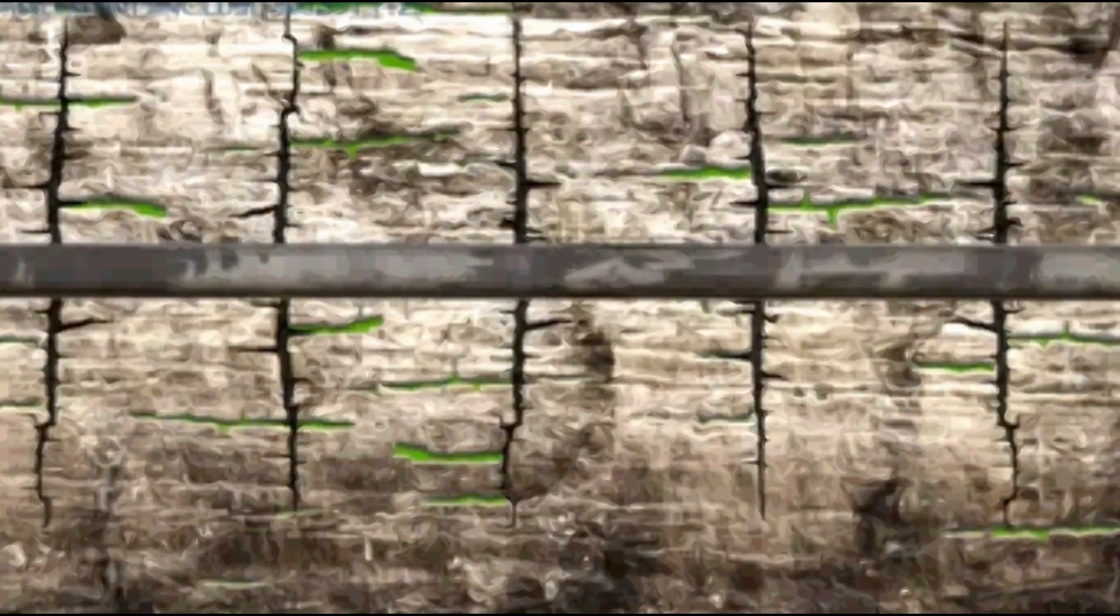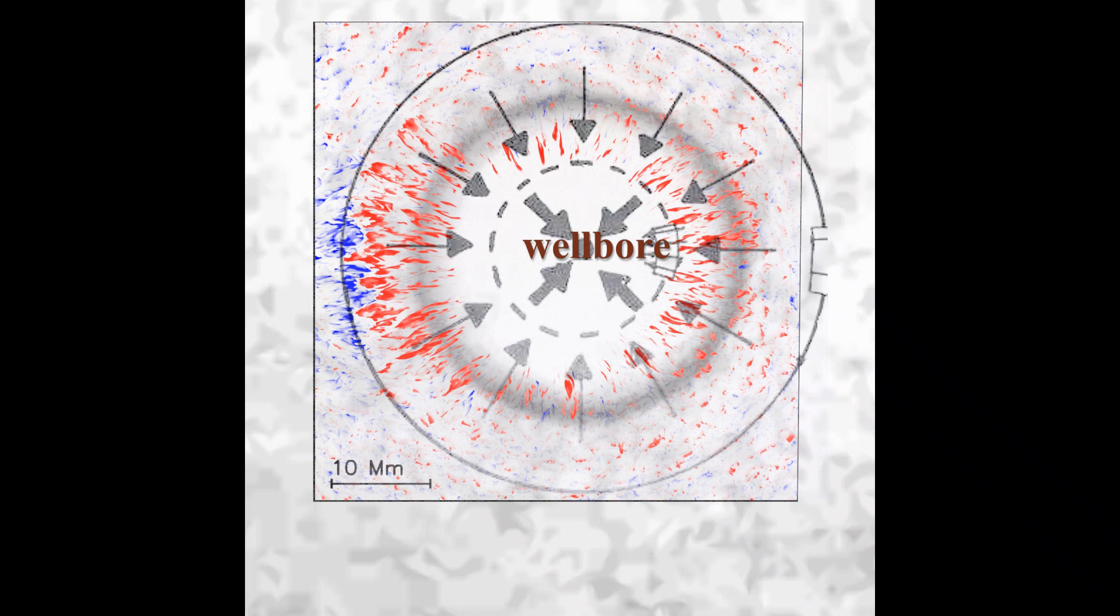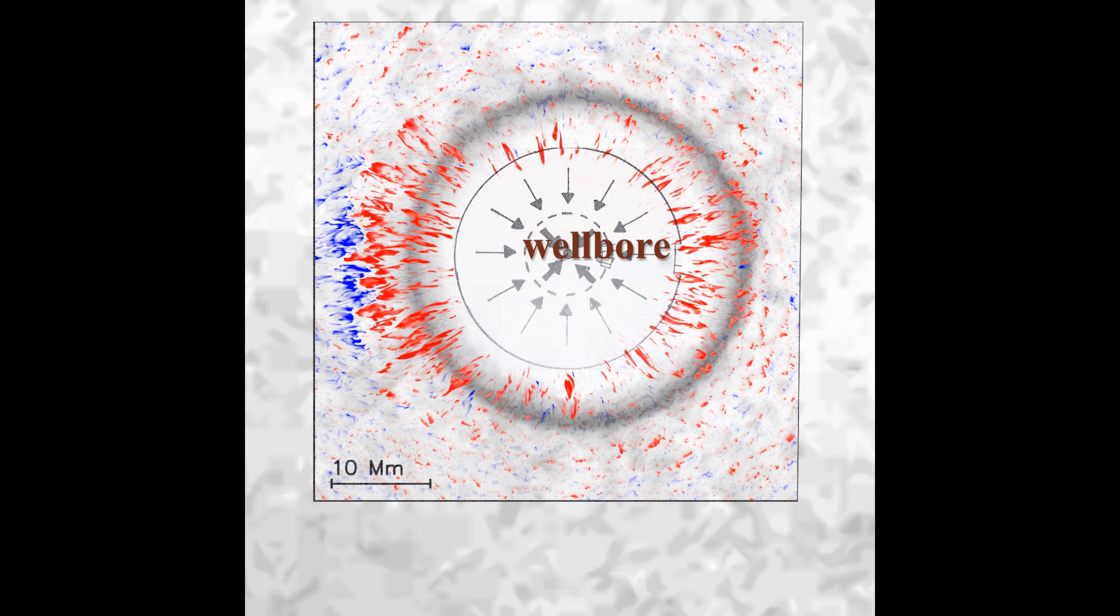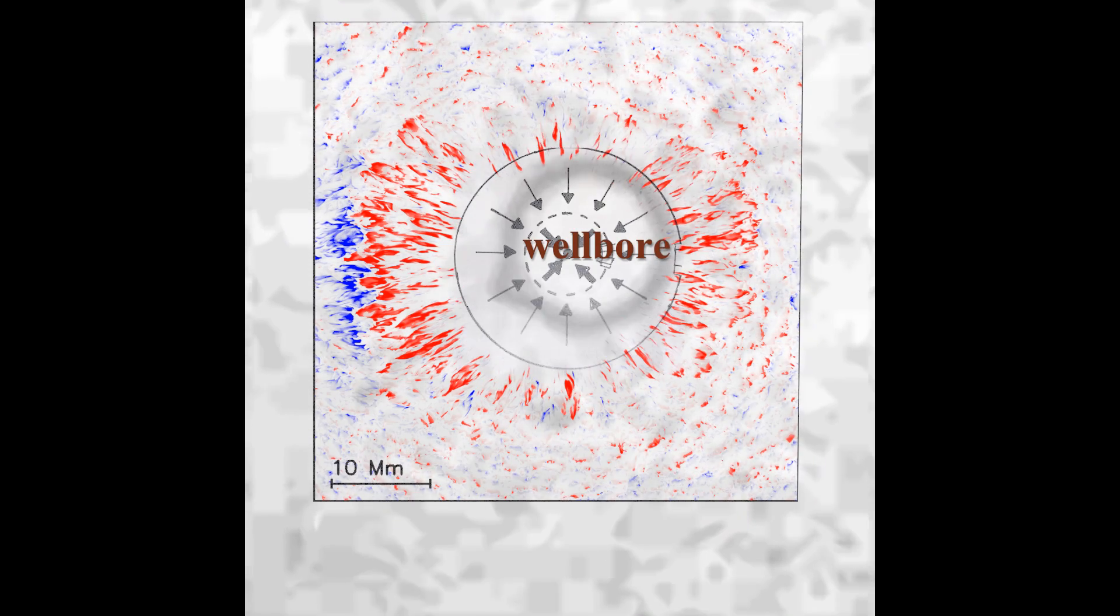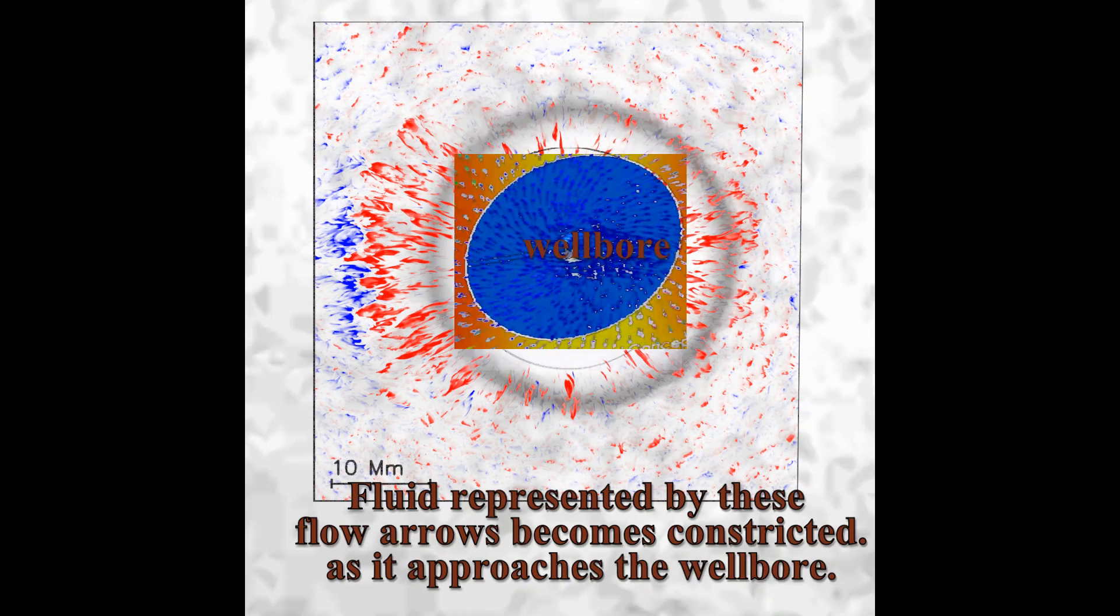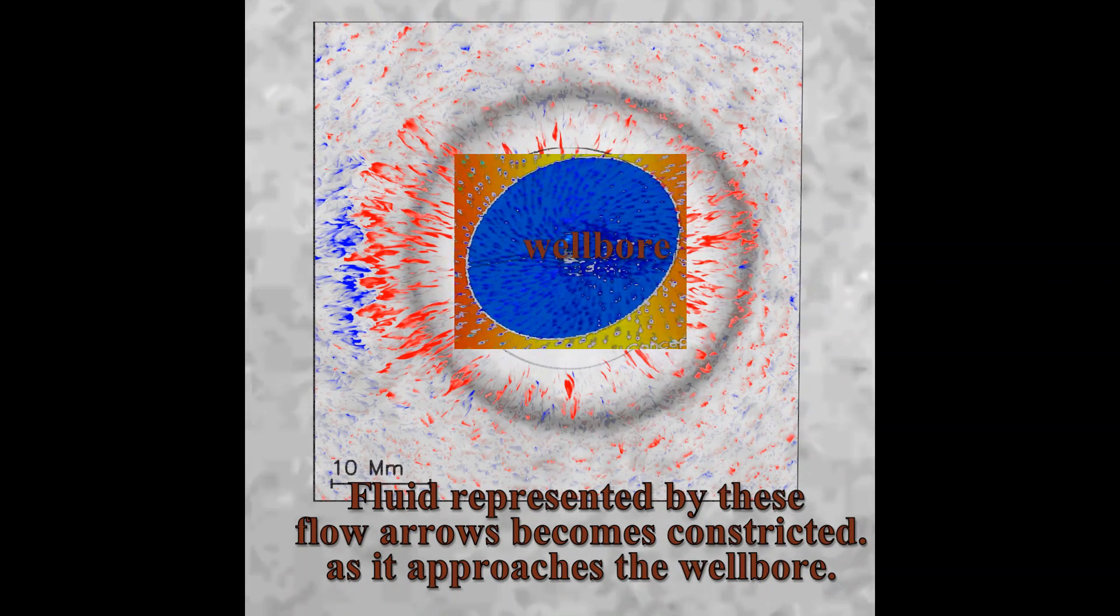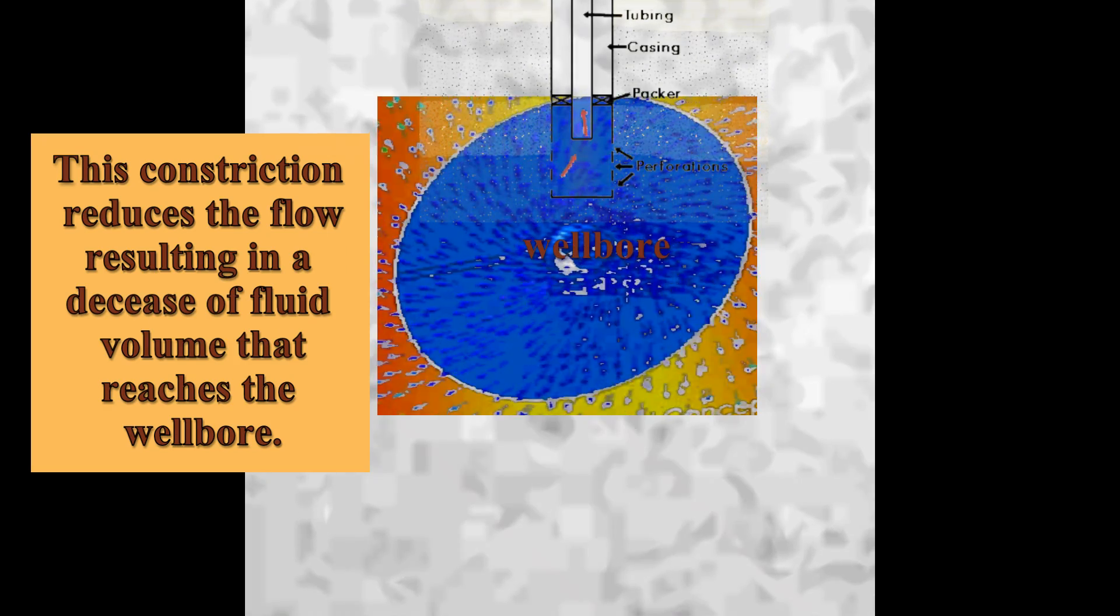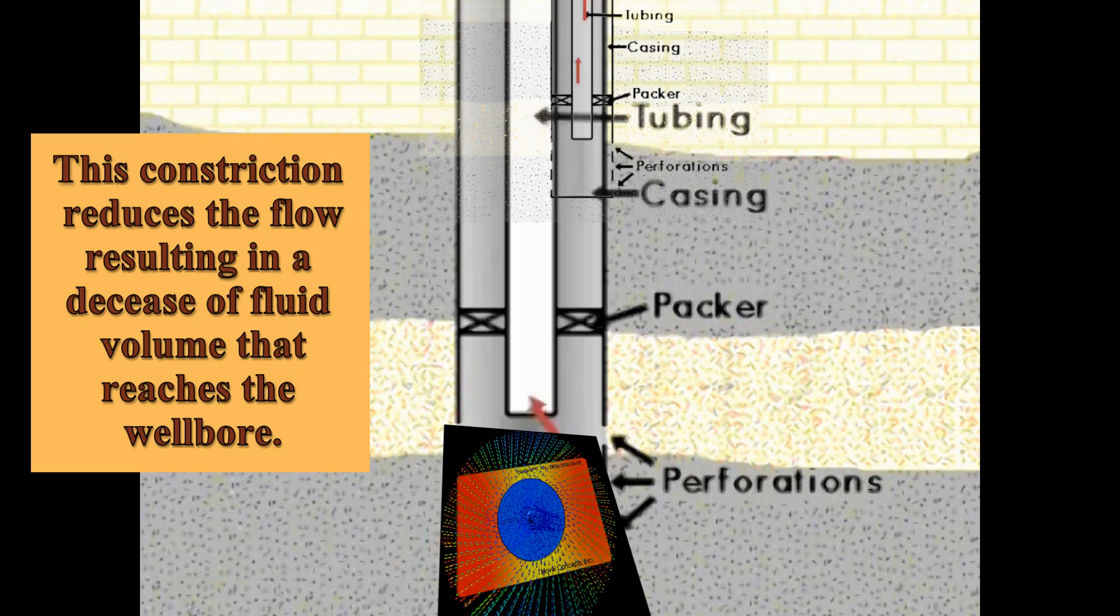Let me show you an illustration that helps explain the function of stimulation. Here you see the geometry of a radial flow. As the flow approaches the wellbore, the flow arrows begin to crowd each other out. The fluid, represented by these flow arrows, becomes constricted as it approaches the wellbore. This constriction reduces the flow resulting in a decrease in the fluid volume that reaches the wellbore.